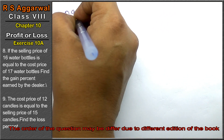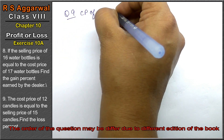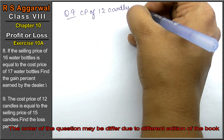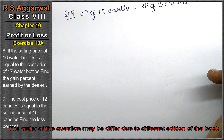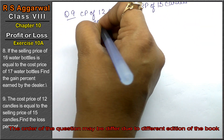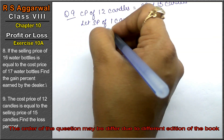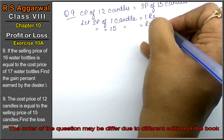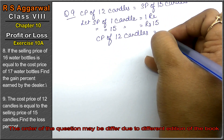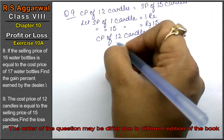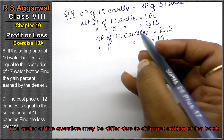Let's do question number 9 of exercise 10a. This is a profit and loss question. Question 9: the cost price of 12 candles is equal to the selling price of 15 candles. The SP is not given, so let the SP of 1 candle equal 1 rupee. Then the SP of 15 candles is 15 rupees. The cost price of 12 candles equals 15 rupees, so the cost price of 1 candle is 15 upon 12.